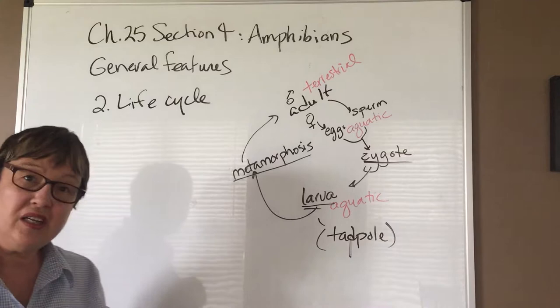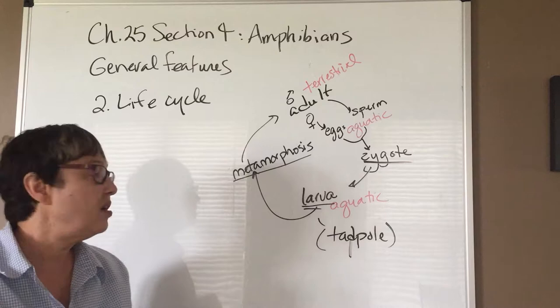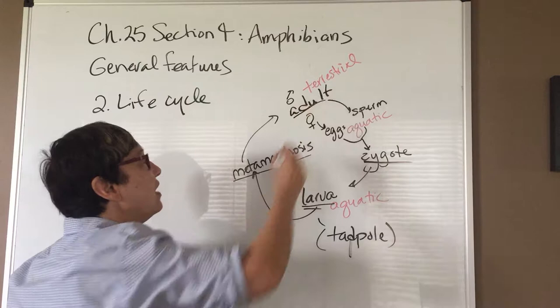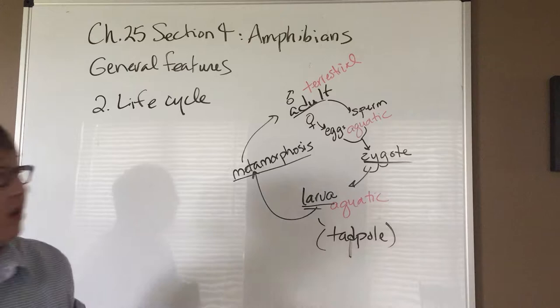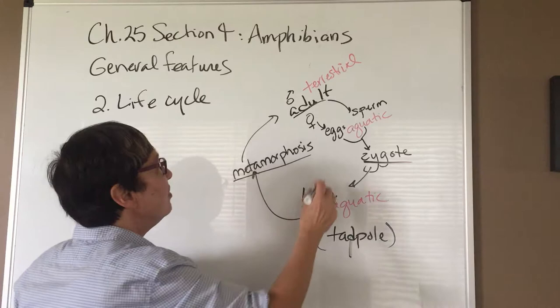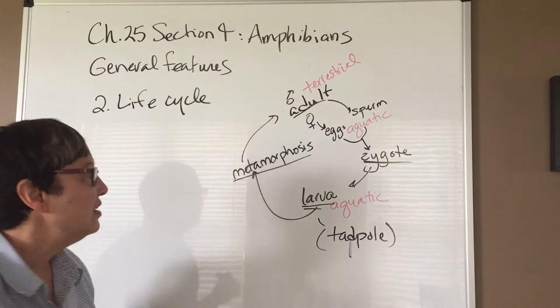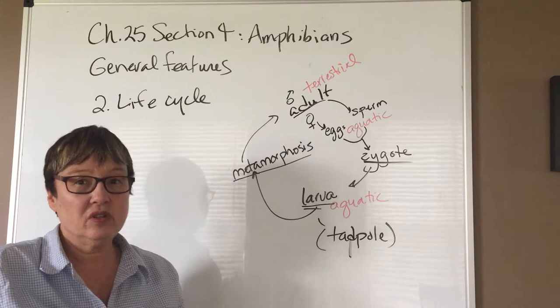The tadpole matures and goes through a fairly dramatic change in body form called metamorphosis — we saw this with insects, and we see it with amphibians too. Many special hormones are involved in that change from larva to adult. The larva and the adult have completely different feeding habits: the larva is more of a plant eater, whereas the adults are insectivores, primarily eating insects.